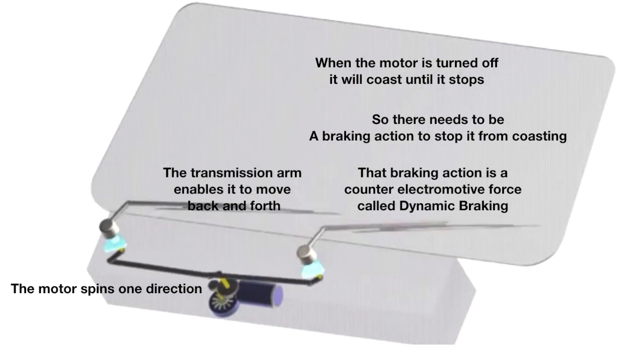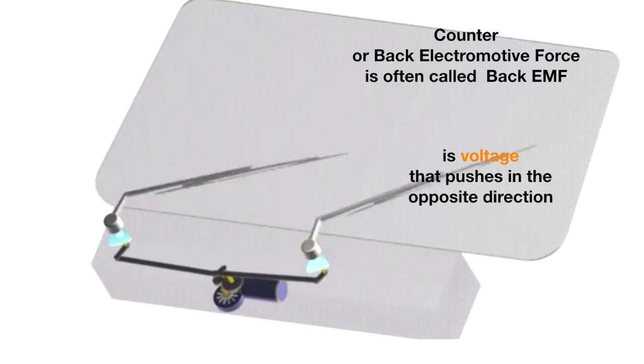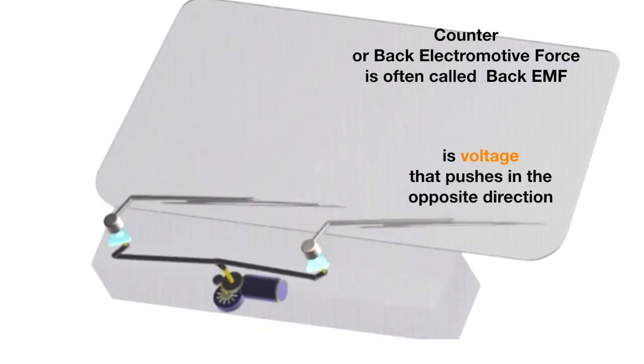That braking action is a counter electromotive force called dynamic braking. Counter or back electromotive force, which is what is sometimes called, it's often called back EMF. It's voltage that pushes in the opposite direction.